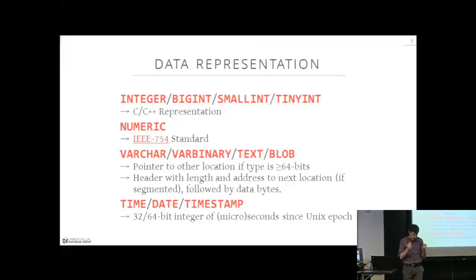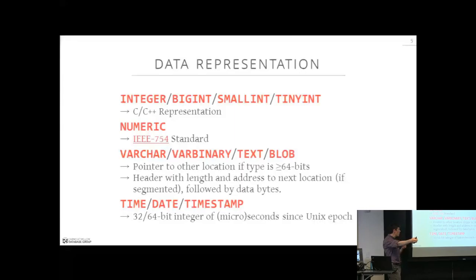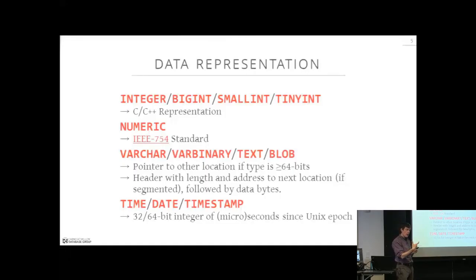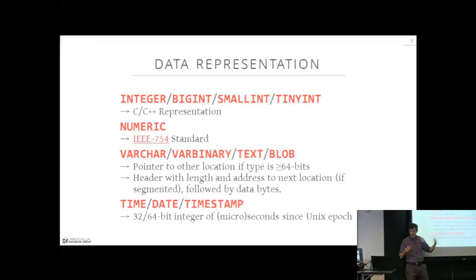For variable-length fields: if the size of the attribute is less than 64 bits, you don't store it inline — instead you store a pointer to the variable-length data pool. At that address there's always a header indicating the chunk size, and if the attribute is broken into different segments within the variable-length pool, there's also a pointer to the next segment for concatenation. In VoltDB they don't do that chaining; in other systems you might spend another 64 bits for the next-segment pointer.